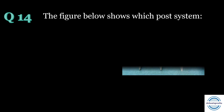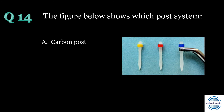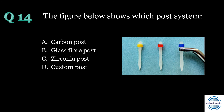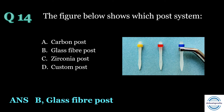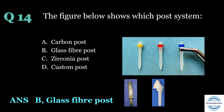Question number fourteen: The figure shows which post system? A) carbon post, B) glass fiber post, C) zirconia post, or D) custom post? The answer is B — the glass fiber post. The carbon post is blackish or dark gray in color. The zirconia post is made by CAD/CAM. The customized metal post is fabricated by casting of a wax pattern formed in the canal.